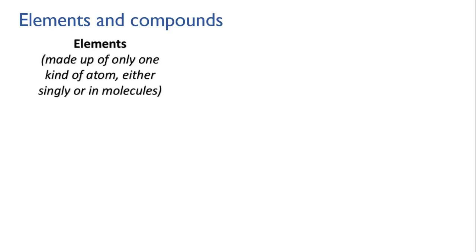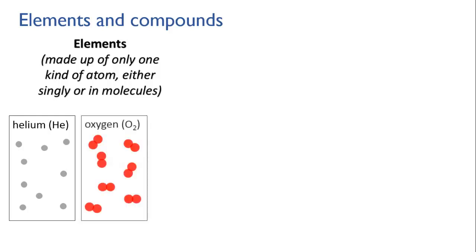The difference between elements and compounds has to do with the kinds of atoms that they're made from. An element is a substance that's made entirely of a single kind of atom. For instance, helium is an element, and this means that it's made up only of one kind of atom, the helium atom. Oxygen's also an element. It happens to be made up of molecules, but each molecule consists of two identical oxygen atoms joined together. So in a container of oxygen gas, although it's full of molecules, there is still only one kind of atom present. They just happen to be hanging around in pairs.